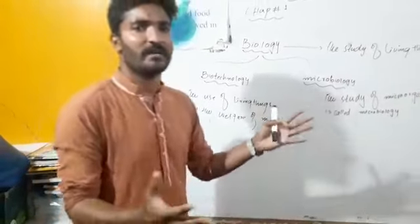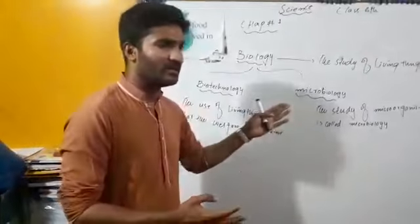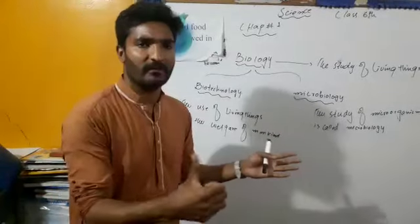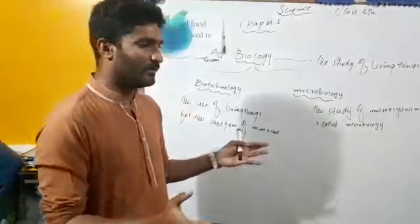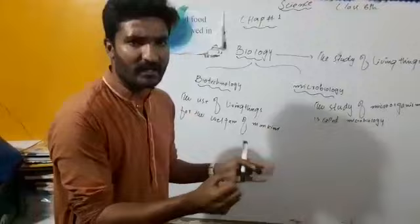The use of living things for the welfare of mankind is called biotechnology. You can see the uses of biotechnology in different areas, in medical areas, or you can see in agricultural areas, or you can see in veterinary areas.